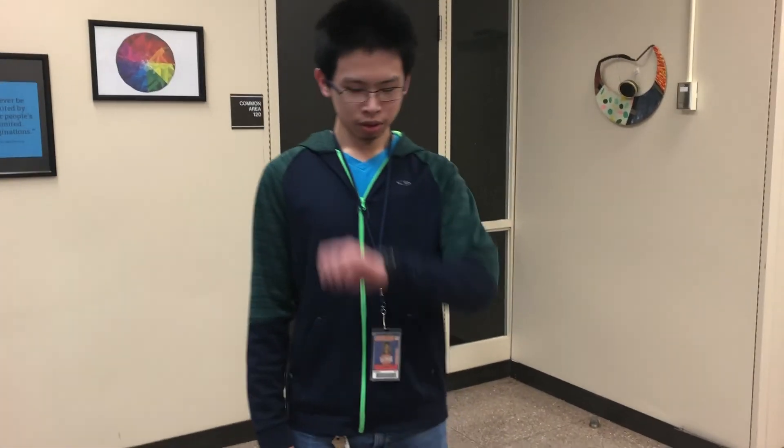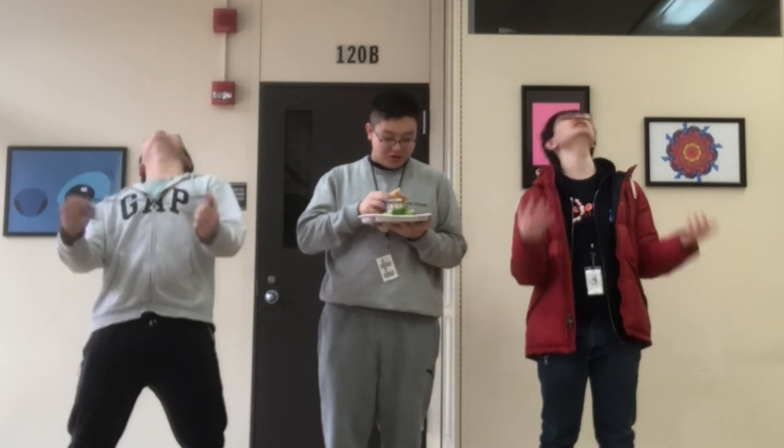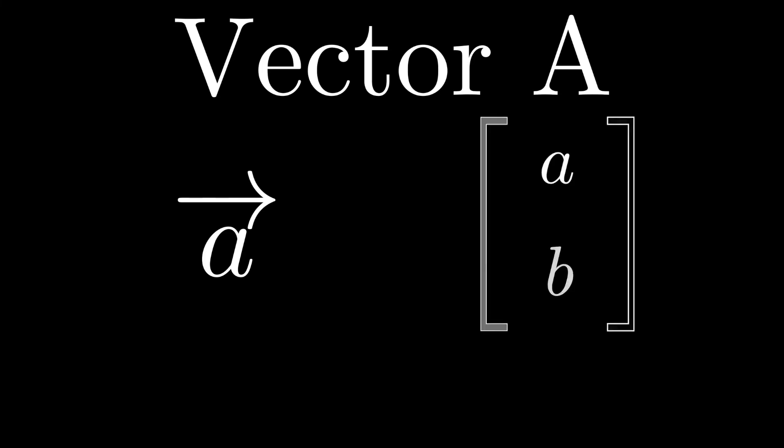Alright kids, we're going to be doing the pacer test today. I think you're going to be running forward and backwards, something like that. Now, it's important to know a vector A can be represented as either A with an arrow on top, which is vector A, or as a matrix with components a and b, which are their x and y components.